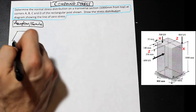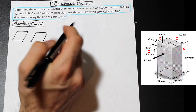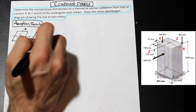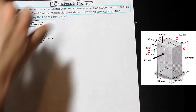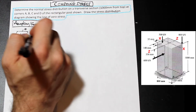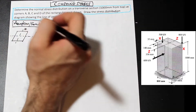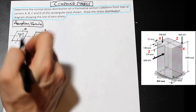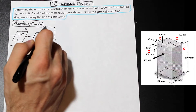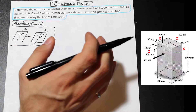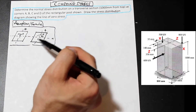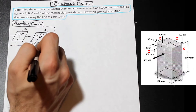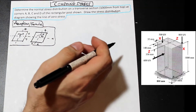We need to define our sign conventions for positive directions in both axes. Looking down at the top of the post, we'll call this X and this Z. For moments acting on the top, we'll say that in the X direction this is positive, and in the Z direction this is the positive direction. For bending, this will be tension and this is compression.